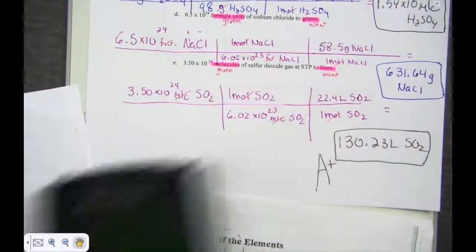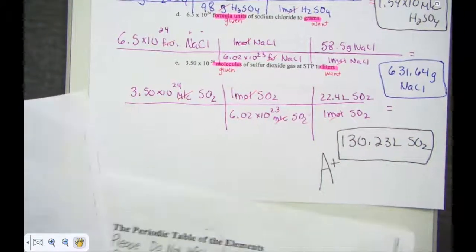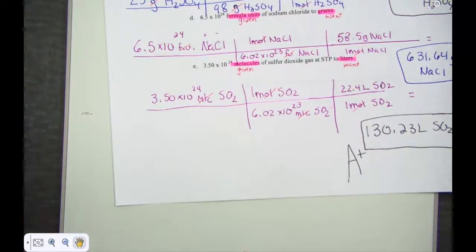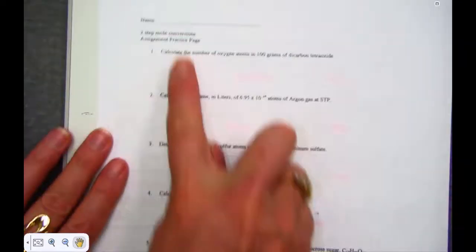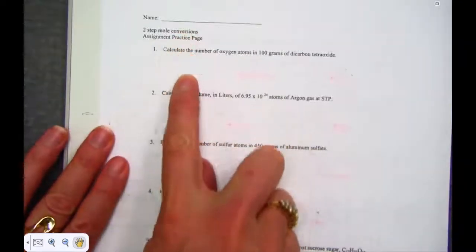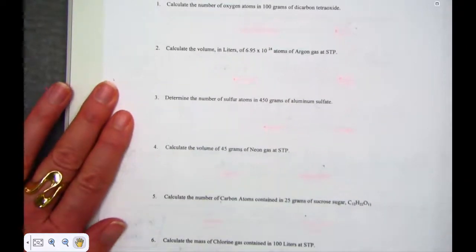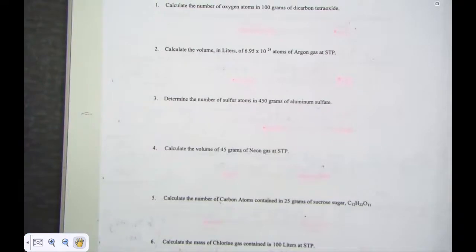We've modeled five examples of two-step problems, giving you plenty of opportunity to find examples as you try some on your own. Your assignment is very similar to what we just practiced — six problems to work by yourself for next time we meet. That's where we'll begin to check our answers. Thank you.